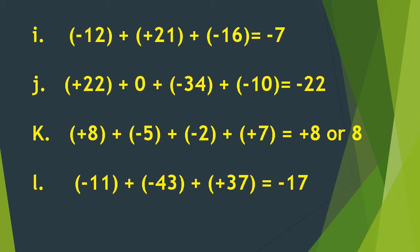Letter K: positive 8 plus negative 5 plus negative 2 plus positive 7 is equal to positive 8. We first add negative 5 and negative 2, which gives negative 7. Then positive 8 plus positive 7 gives positive 15, and positive 15 plus negative 7 gives the answer positive 8.